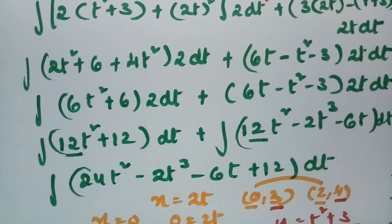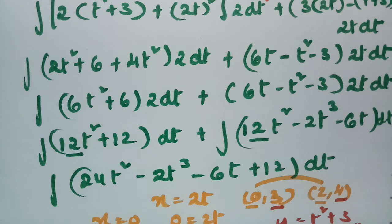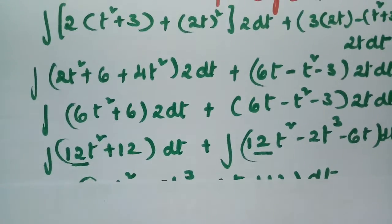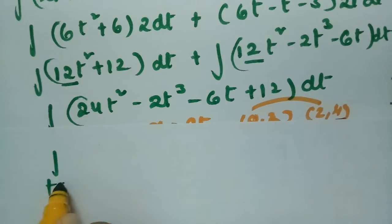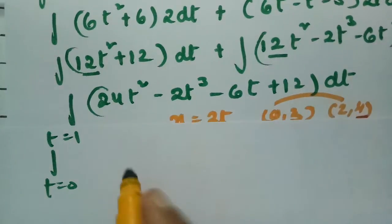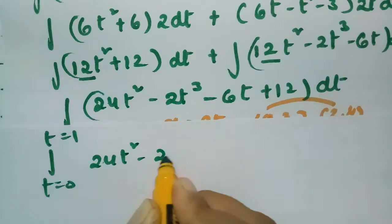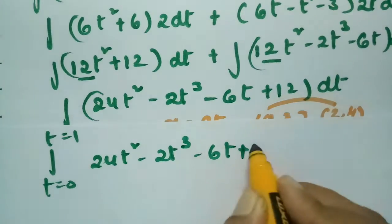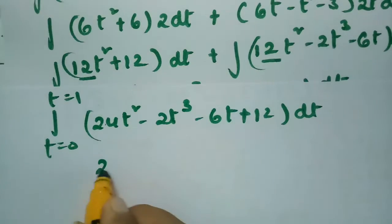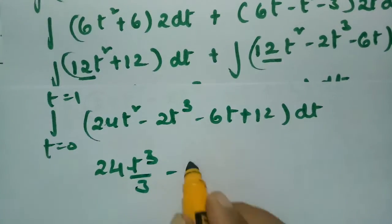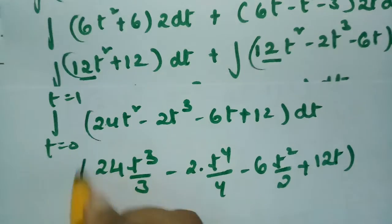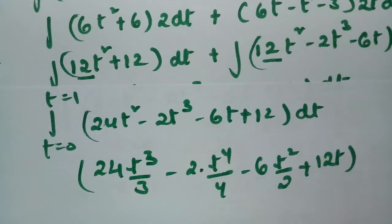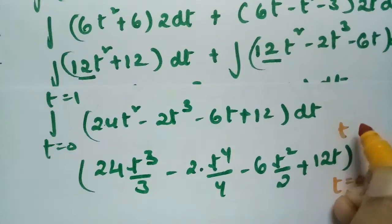So we evaluate the integral from t = 0 to t = 1. The integrand is 24t² - 2t³ - 6t + 12. Integrating term by term: 24t³/3 - 2t⁴/4 - 6t²/2 + 12t, evaluated between t = 0 and t = 1.